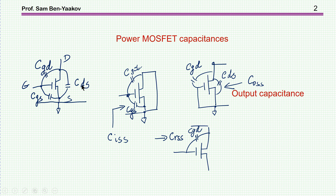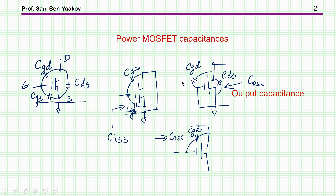Manufacturers give us measured parameters. One is C_ISS, the capacitance seen at the input — gate to source with drain connected to source. Then we have C_OSS between drain and source with gate connected to source. And we have CGD, which is defined as CRSS — a very important capacitance that has a lot of effect on the operation during switching.